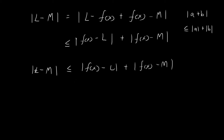The only situation in which L minus M will still be smaller than this arbitrarily small term is when L minus M is equal to 0. So the idea is: we prove that the right-hand side can be made arbitrarily small, and since this inequality must still hold, the only case in which this is possible is when L is equal to M.